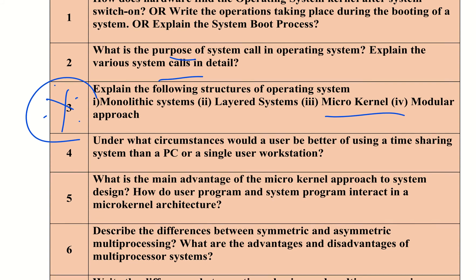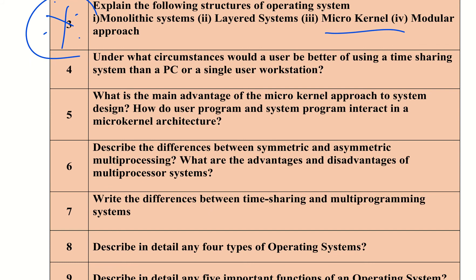The question on different types of operating system includes multiprocessing systems. Multiprocessing systems have two types: symmetric and asymmetric — know the difference between them. Also study the advantages of multiprocessing systems, and the difference between time-sharing and multiprogramming systems.